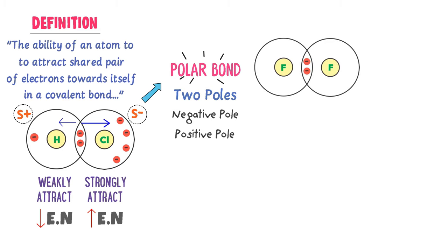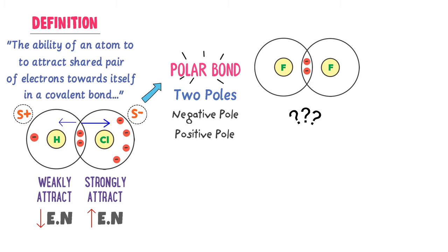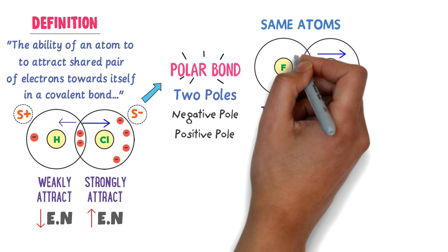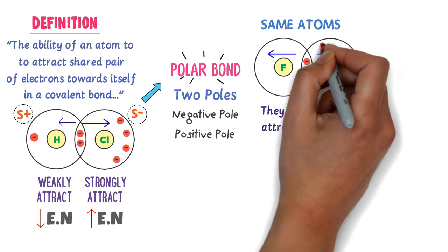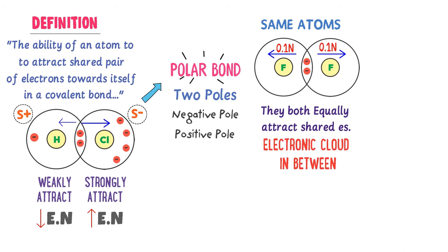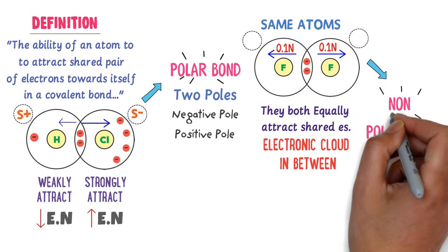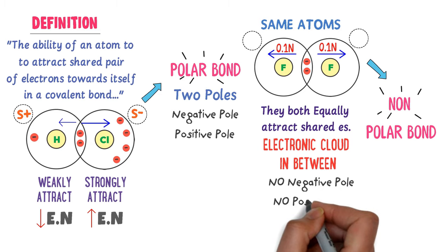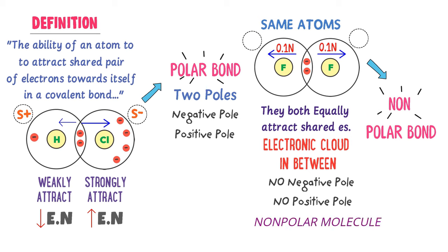Secondly, consider a molecule of fluorine. Two fluorine atoms share one pair of electrons to form a covalent bond. Here, which atom is more electronegative? Well, both atoms are the same — they both equally attract the shared pair of electrons. For example, if one fluorine atom exerts 0.1 N attractive force on the shared pair of electrons, then the other fluorine atom also exerts 0.1 N attractive force. The electron cloud is in between, so no partial negative charge and no partial positive charge appears on either fluorine atom. There are no positive and negative poles, so the fluorine molecule has a nonpolar bond. If there are no positive and negative poles in a molecule, it is called a nonpolar molecule or nonpolar covalent bond.